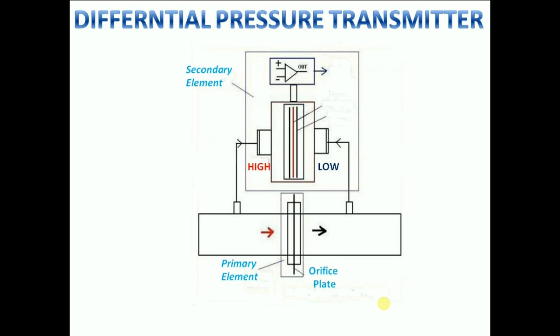A good DP transmitter will ensure that the differential pressure is measured accurately independent of other changing parameters and will reliably transmit a signal to represent the differential pressure.